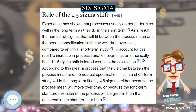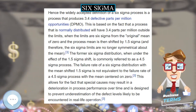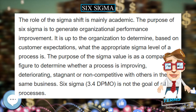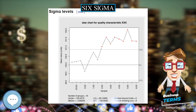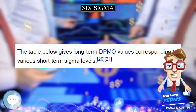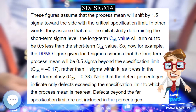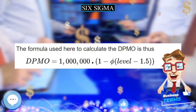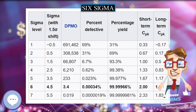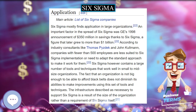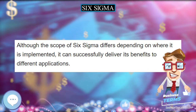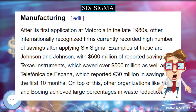Experience has shown that processes usually do not perform as well in the long-term as they do in the short-term. As a result, the number of sigmas that will fit between the process mean and the nearest specification limit may drop over time compared to an initial short-term study. To account for this real-life increase in process variation over time, an empirically based 1.5 Sigma shift is introduced into the calculation. A process that fits 6 Sigma in a short-term study will in the long-term fit only 4.5 Sigma, either because the process mean will move over time or because the long-term standard deviation will be greater than observed in the short-term.